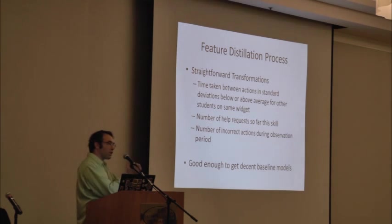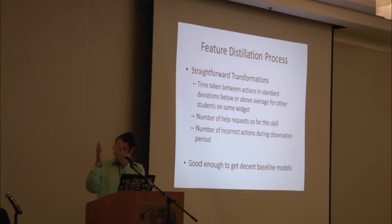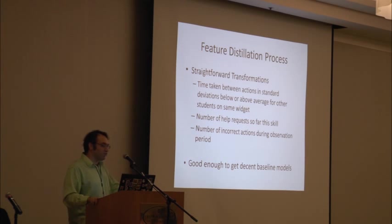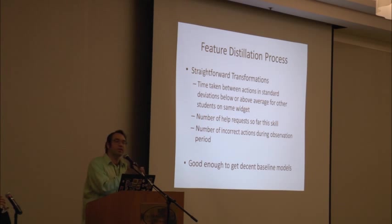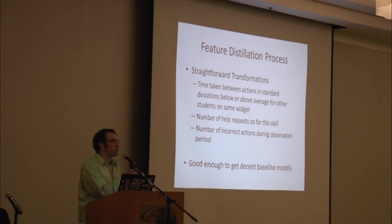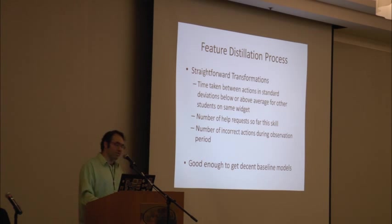A decade ago, we started taking straightforward transformations like time taken between actions and standard deviations below or above the average for other students doing the same thing — the idea being that if everybody takes six seconds to do something, nine seconds means something totally different than if everybody takes 40 seconds. We looked at students' history of help requests and incorrect actions, and got decent baseline models — enough to get me a PhD.